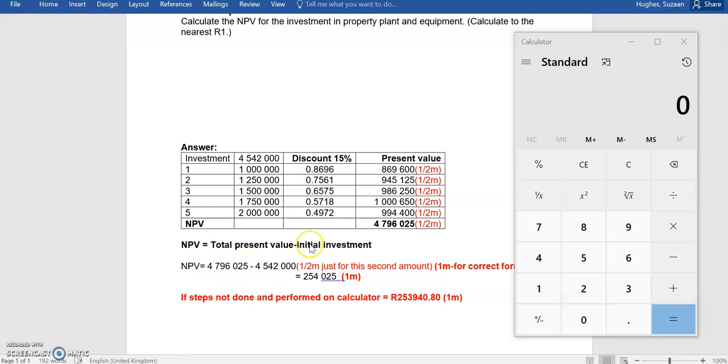Minus the initial investment. So, that's why looking up the 4.542 million from our financial statement was really important in order to get the correct answer. So, if we do our basic maths there, it gives us a net present value for this project of 254,025.